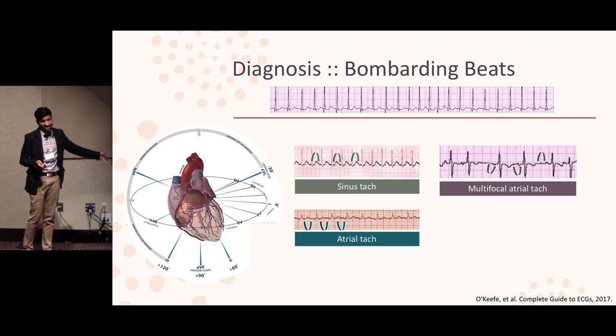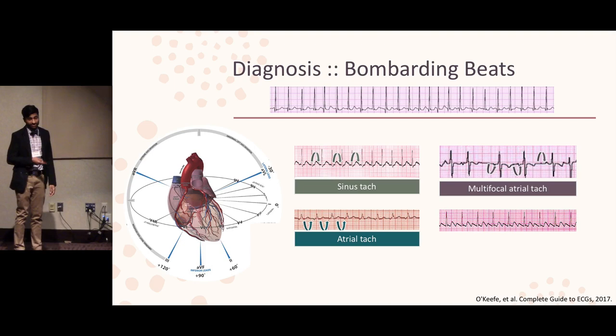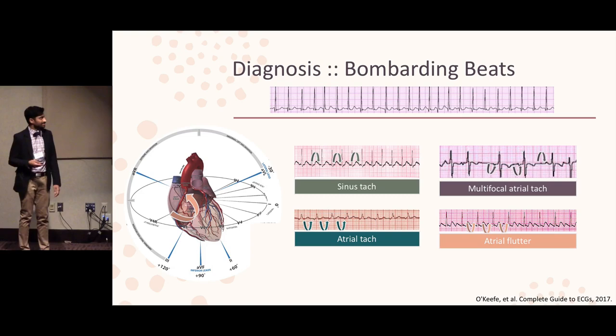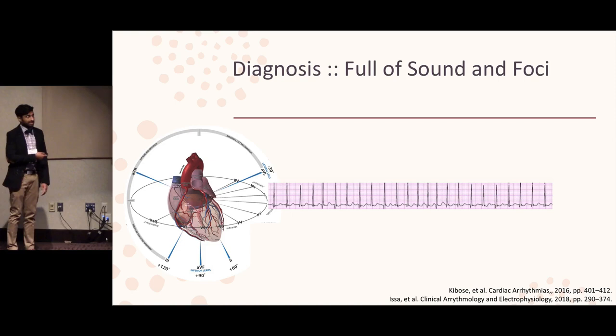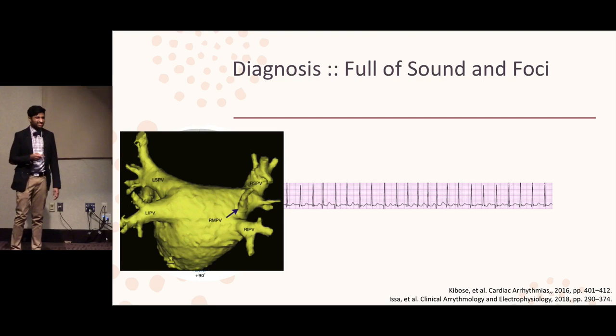These are all very common dysrhythmias that you're going to see in the ICU, but none of these require anticoagulation, unlike atrial flutter. Atrial flutter, with negative P-wave deflections in the inferior leads, comes from an abnormal focus that goes along the cavotricuspid isthmus. But this isn't what's going on with our patient here — we can't even see what's going on with the P-waves, so let's take a look a little bit closer at the atria itself.